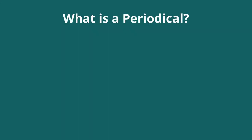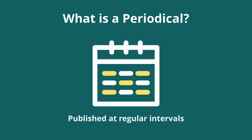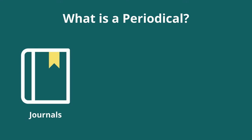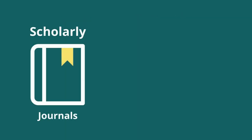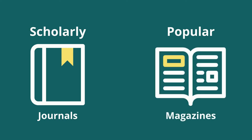A periodical is simply a publication that is published at regular intervals and may come in many forms, including journals, magazines, and newspapers. Scholarly periodicals are sometimes referred to as journals, while popular periodicals may be called magazines.